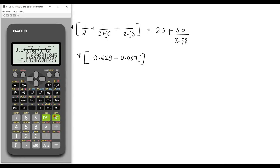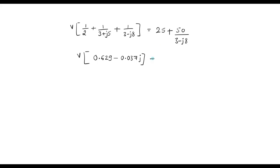Now similarly on right hand side, I will simplify this. We have 25 plus 50 over 3 minus 8I. So this is the result on right hand side.